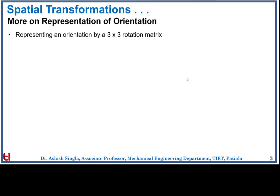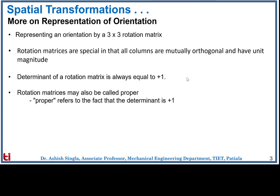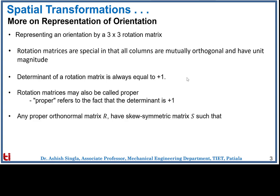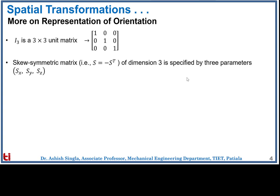Regarding orientation, we know that the orientation of any body with respect to any given frame of reference can be shown with the help of a three-by-three rotation matrix. These rotation matrices are orthogonal in nature and have unit magnitude. The determinant of a rotation matrix is always equal to plus one, which is why they are called proper matrices. Any proper orthonormal matrix has a skew-symmetric structure S such that it can be written as (I3 minus S) inverse into (I3 plus S), where I3 is the 3×3 identity matrix and S is a skew-symmetric matrix where S equals minus S-transpose.